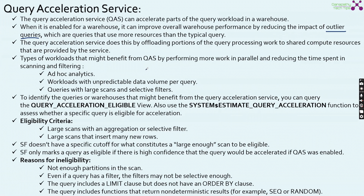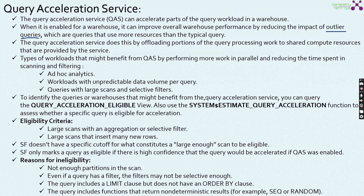What types of workloads might benefit from QAS? These are ad hoc analytics, workloads with unpredictable data volume per query, and queries with large scans and selective filters. To identify the queries or warehouses that may benefit from the query acceleration service, you can utilize the query acceleration eligible view and the system estimate query acceleration function.